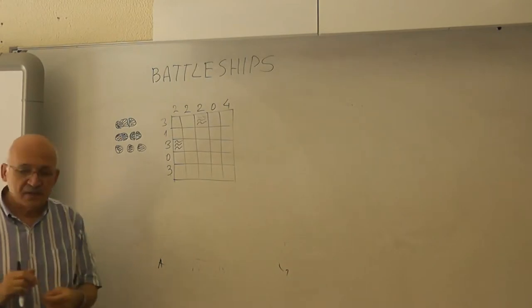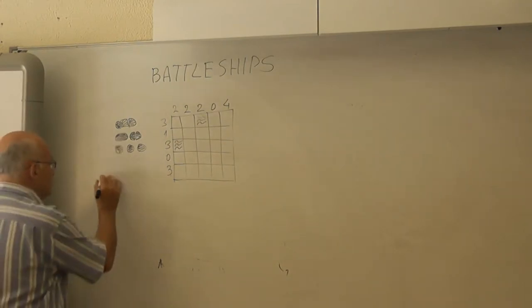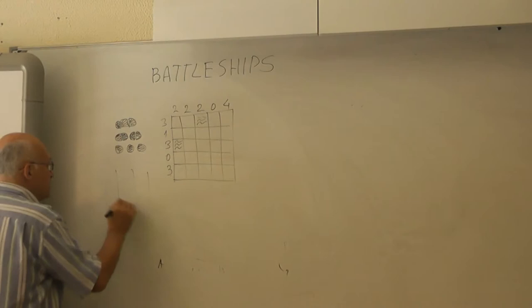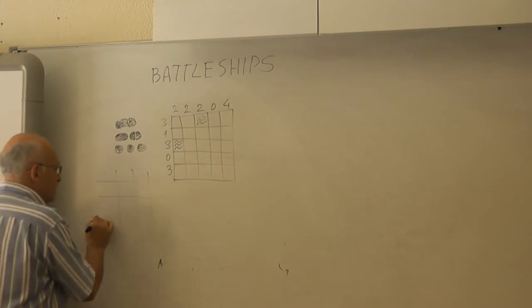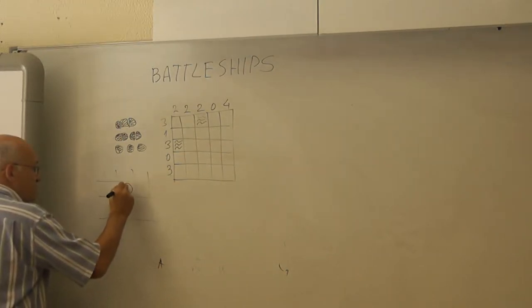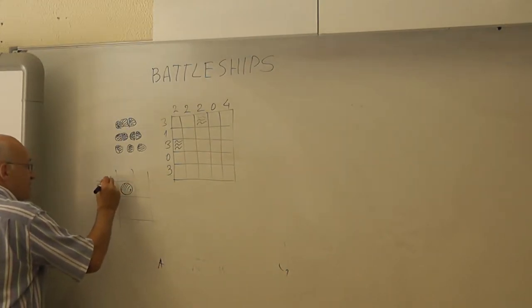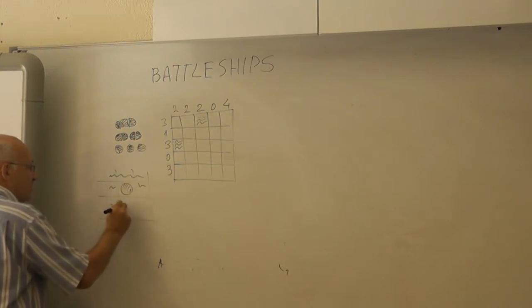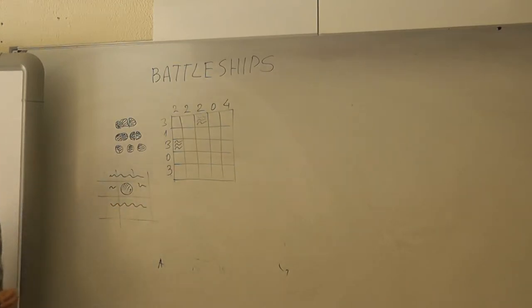The rule is that two ships cannot be adjacent. So if, for example, if I have a ship here, then all these squares must be water.